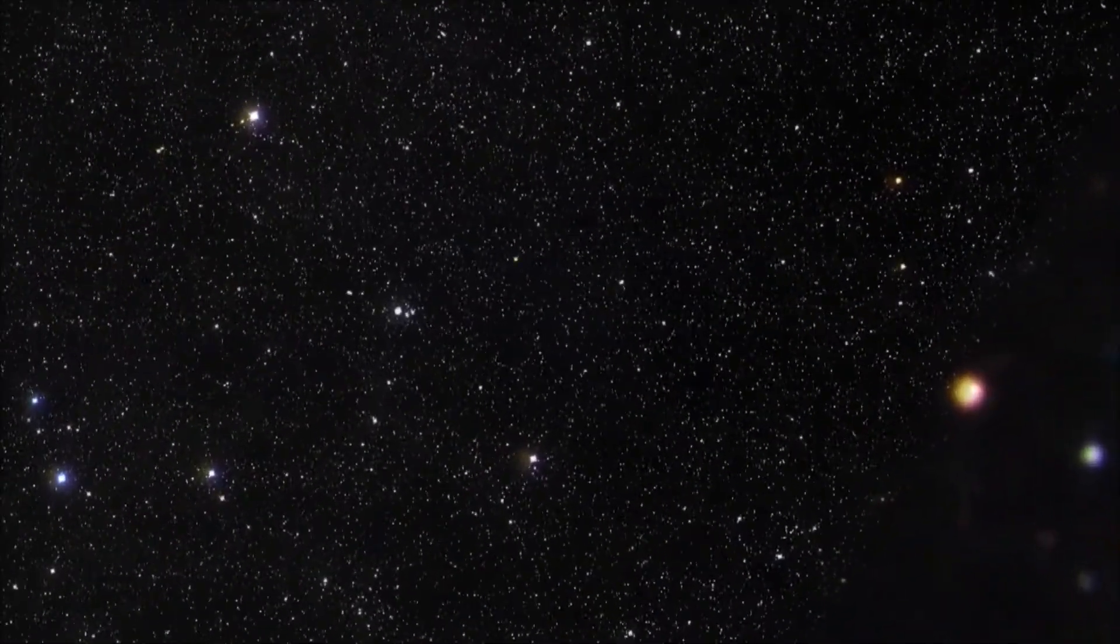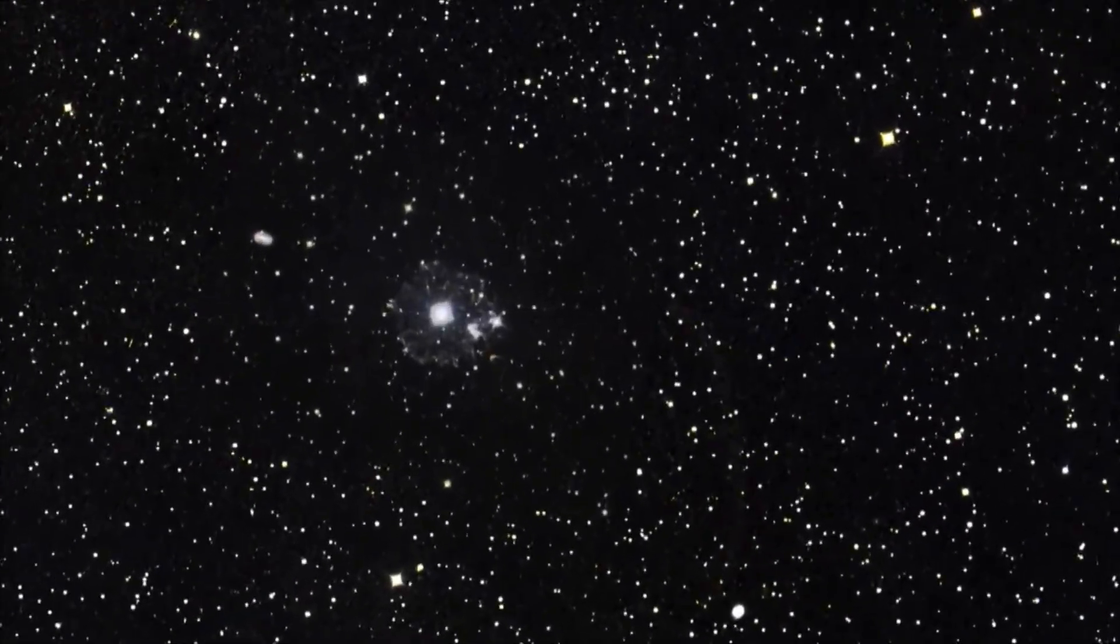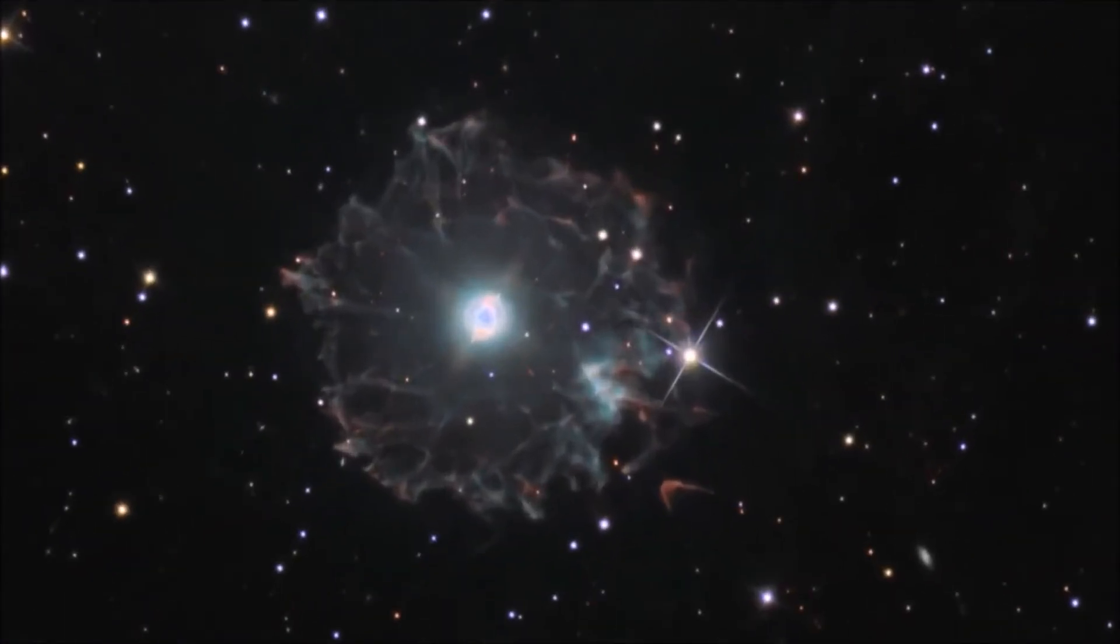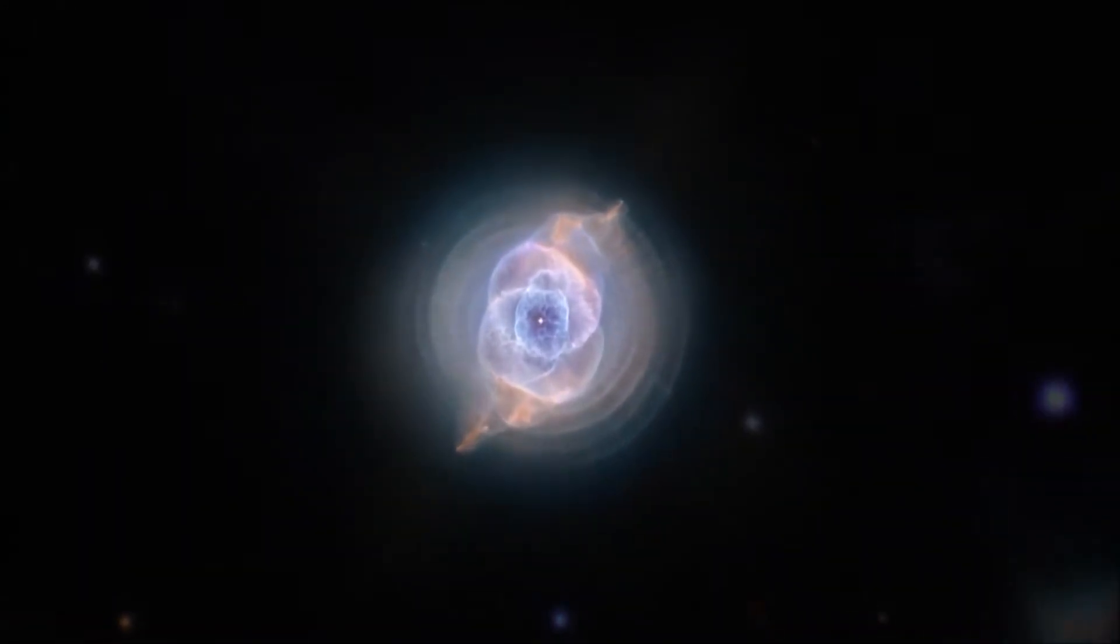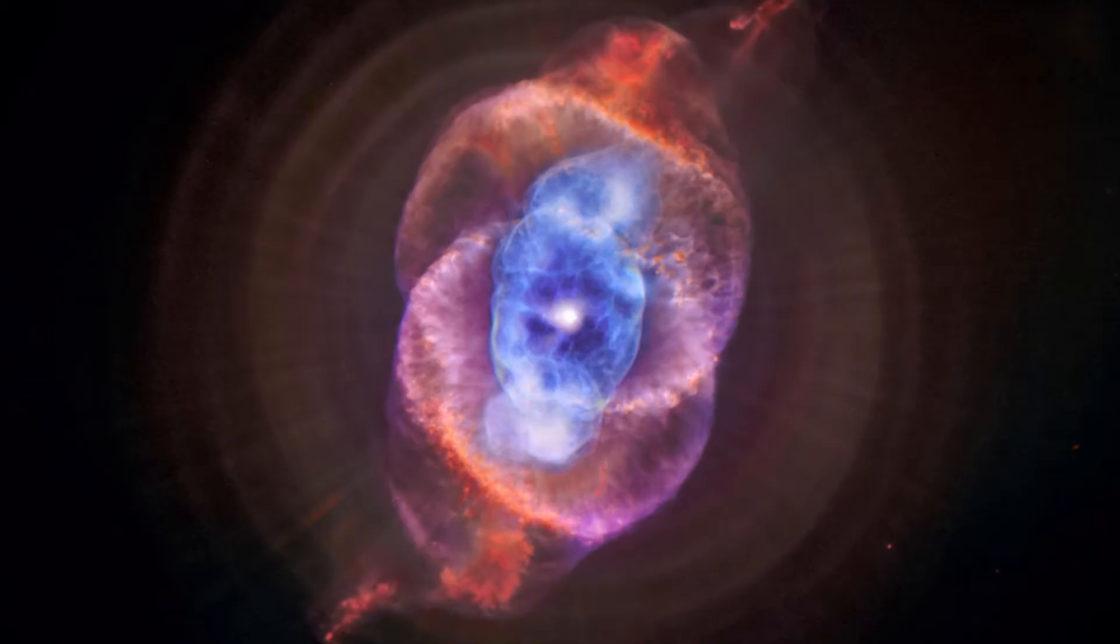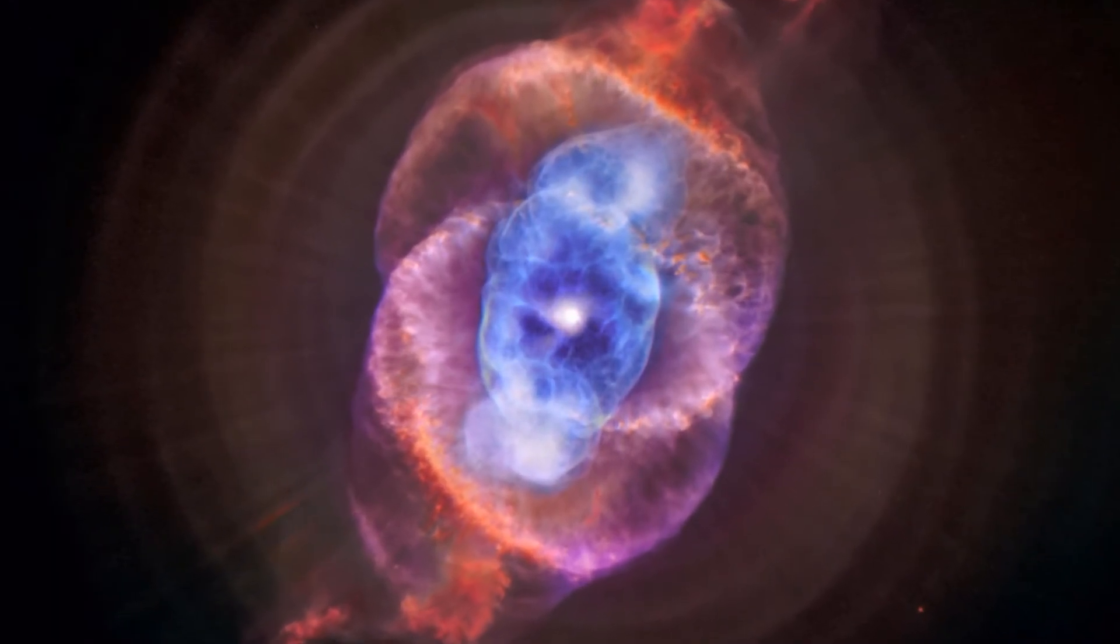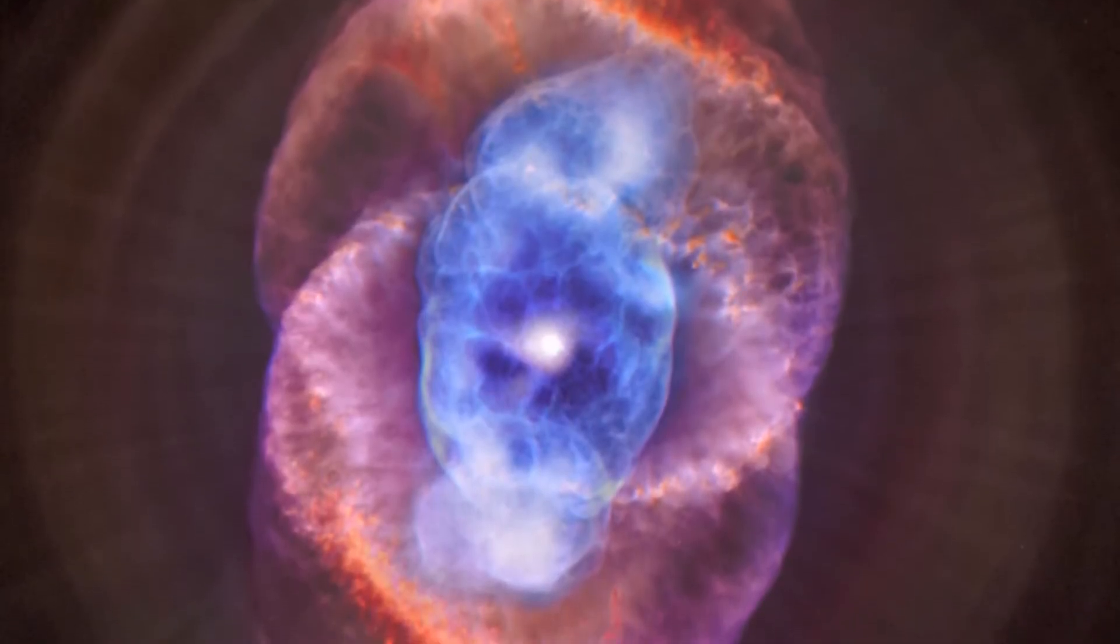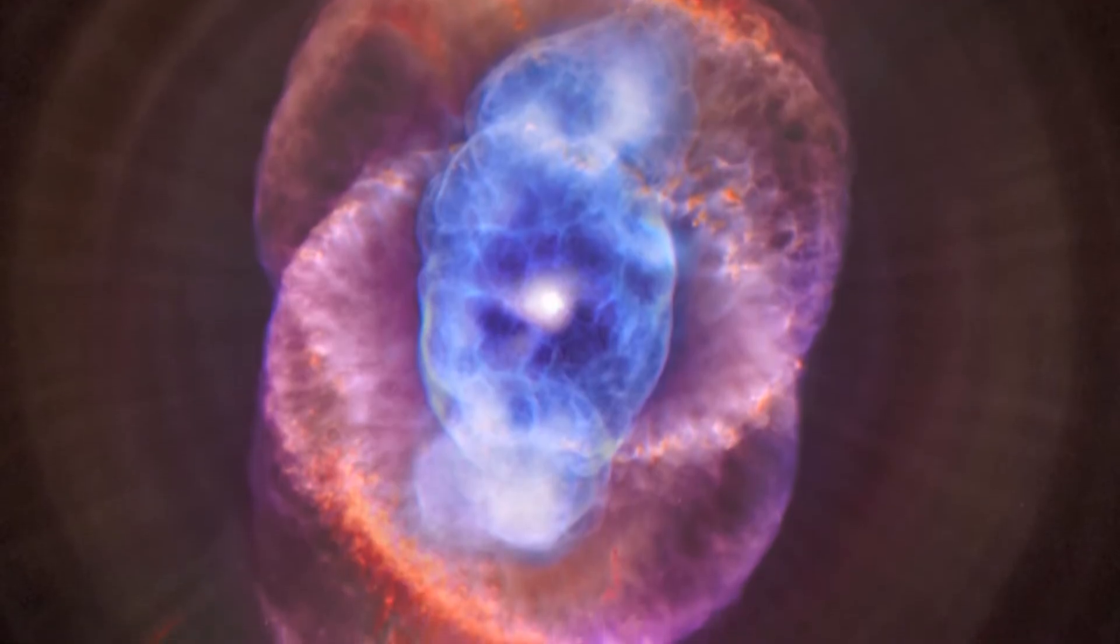One last famous example of a planetary nebula is the Cat's Eye Nebula. It is a bit further away from Earth at about 3,000 light years, but it is still one of the brightest planetary nebulae in the sky. The Cat's Eye Nebula is made up of several rings of gas, each with a different color and pattern. The central star is so hot that it has ionized the gas around it, creating a bright blue color in the middle of the nebula.